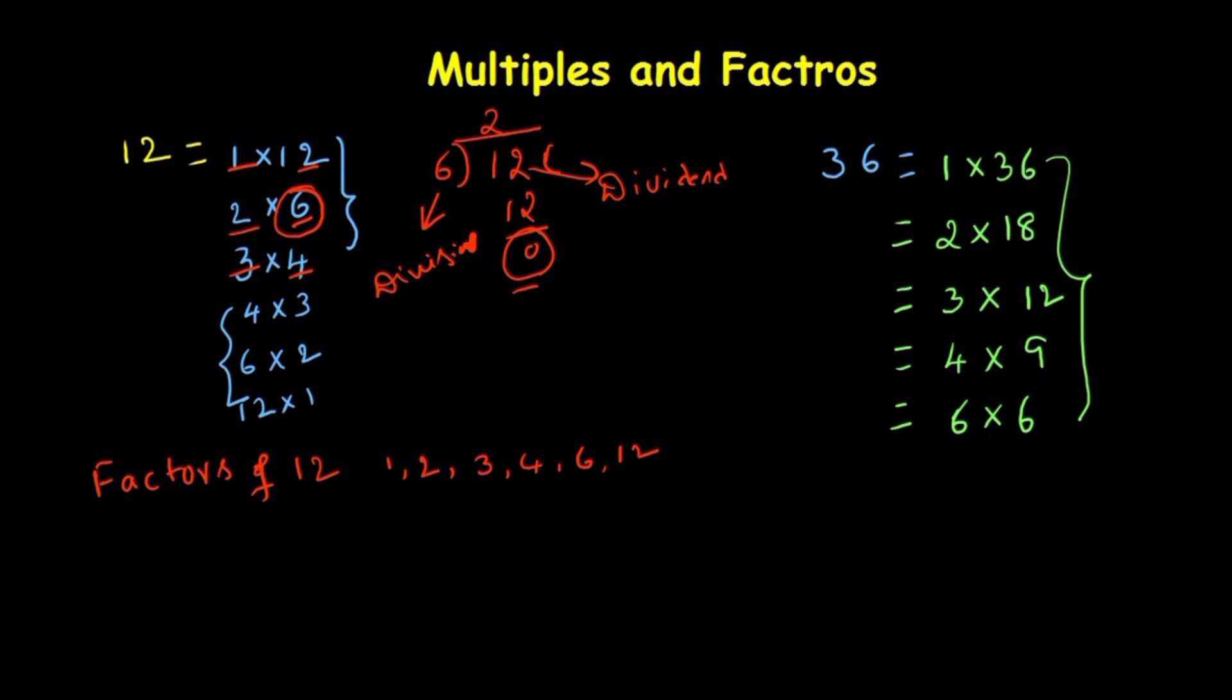So what are the factors of 36? That is 1, 2, 3, 4, 6, 9, 12, 18, and 36. Here is a very important observation: observe here 1 and 12, here also you can observe 1 and 36.